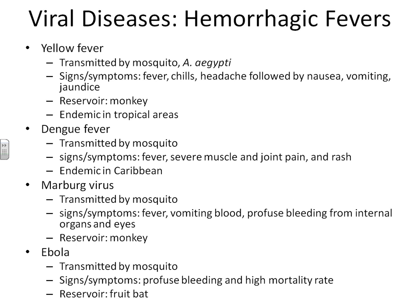Another hemorrhagic fever is called the Marburg virus. Marburg is very similar to yellow fever with a monkey reservoir and a mosquito vector. The symptoms and signs are also very similar, except this is the first one of the hemorrhagic fevers we are looking at where we see the sign of extremely profuse bleeding from all of the internal organs and the eyes.